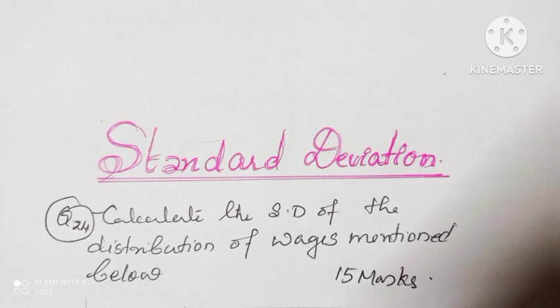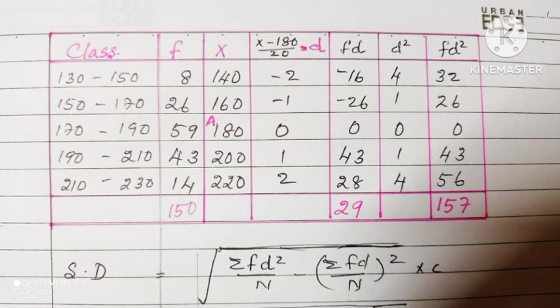Last question is calculate the standard deviation for the distribution. The distribution is 130 to 150, 150 to 170, 170 to 190, 190 to 210, 210 to 230. Frequencies are given: 8, 26, 59, 43 and 14. The sum of frequency is 150 and mid-value of x we are taking and d is taking and fd is taking. The sum of fd is equal to 29. d square we are finding. f into d square we are finding. The sum is 157.